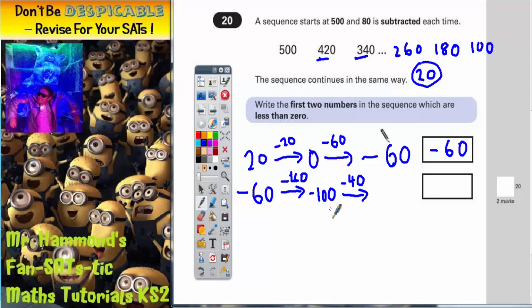And if you're on negative 100, down another 40 would take you to negative 140. So that's the second answer that needs to go in the box. And that's it. That's your two answers.